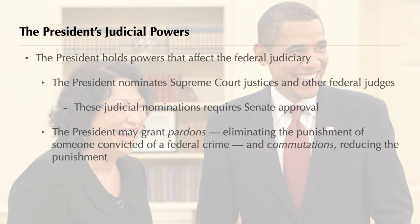As part of the system of checks and balances, the president has several powers that affect the judicial branch. Most importantly, the president chooses Supreme Court justices and other federal judges. Of course, the president's power is balanced by the Senate, which must confirm these appointments. The president may limit the power of the judicial branch by putting off or reducing the punishment of someone convicted of a crime in federal courts — that's called a commutation. The president may even do away with the punishment by granting a pardon.